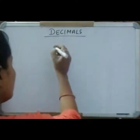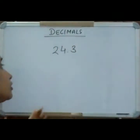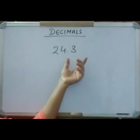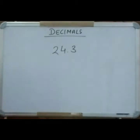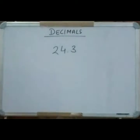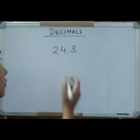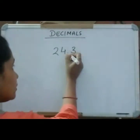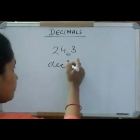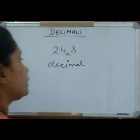Suppose, look here, I have a number: 24.3. We have written the number 24.3, and this point in the middle is the decimal. This point is the decimal.